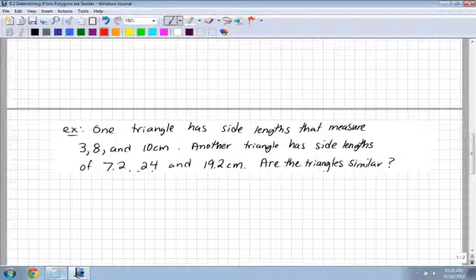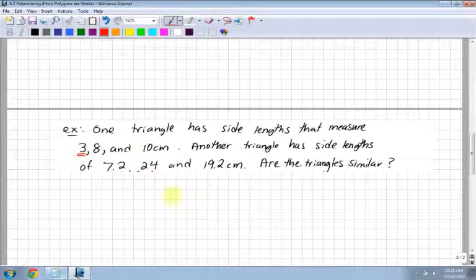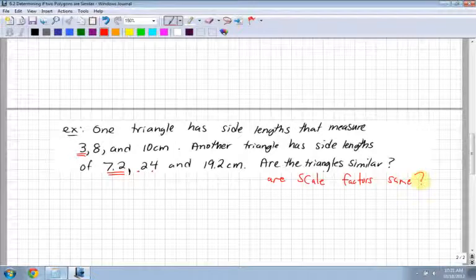So what you have to do is you have to look for the values to see, OK, which one's the biggest, which one's the middle, and which one's the smallest? So let's look here first. 3, 8, and 10. OK, well, I have a 3. That's the smallest. Which one is the smallest between 7.2, sorry, that's a comma, 7.2, 24, and 19.2. Which one's the smallest? Right. The first one. So I have 7.2. So let's see. We're trying to figure out, are they similar? So are the scale factors the same? Right? So check the scale factors.